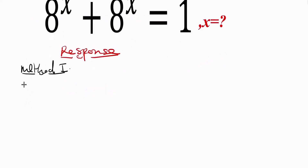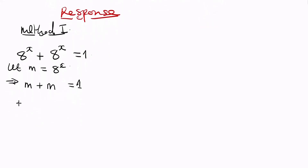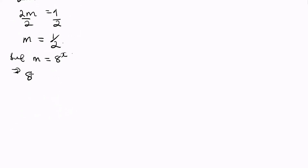Method one. The expression we have is 8 raised to power x plus 8 raised to power x equals 1. I can see these two terms are the same, so I can let m equal to 8 raised to power x. That gives us m plus m equals 1. Simplifying, I have 2m equal to 1. Making m the subject by dividing both sides by 2, I get m equals one half. Now coming back, since m equals 8 raised to power x, we have 8 raised to power x equals one half, which is the same as 2 raised to power negative 1.